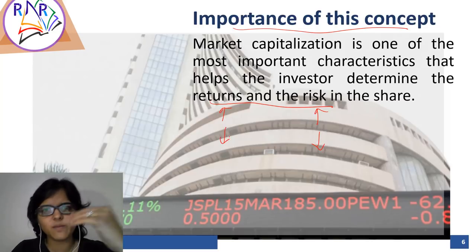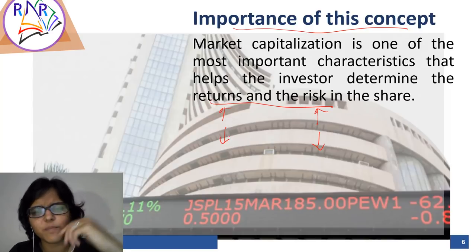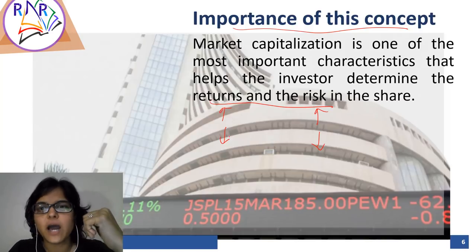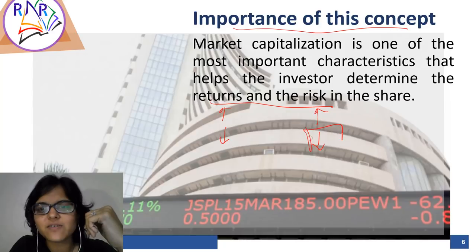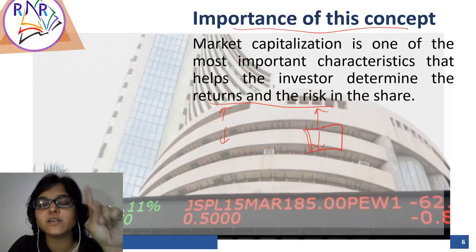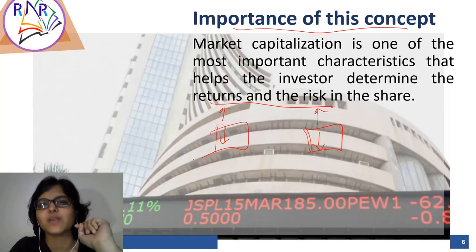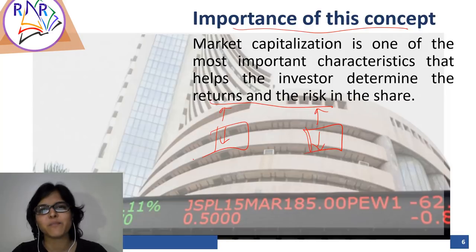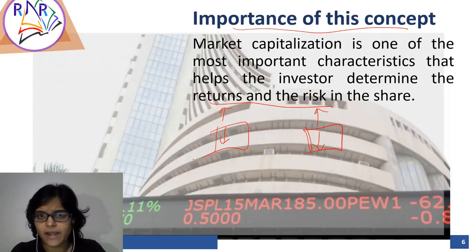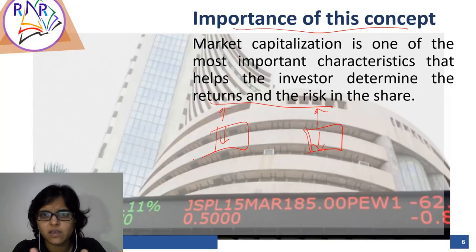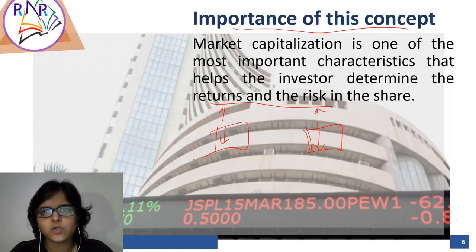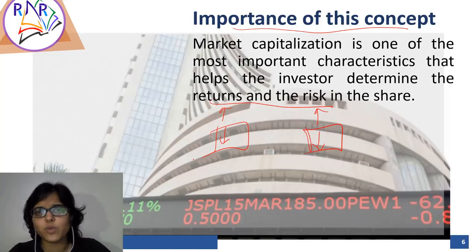Yeh jitni bhi large cap companies hain - kya yeh well-established companies hain? Aapne sabhi inke naam sune hain. Yahan pe risk factor comparatively kam hoga, and if risk factor comparatively kam hai toh inke upar ke returns bhi comparatively kam rahenge. So if you go by this thumb rule, ideally sabhi apne returns large caps ke isi criteria mein fit honge - ki risk kam hai, return bhi kam aayega. Let us check with the help of an example.